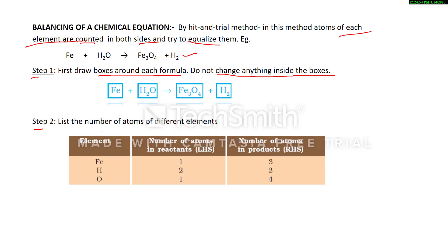In the second step, list the number of atoms of different elements. In this reaction, three elements are involved: iron, hydrogen, and oxygen. On the reactant side, iron is 1 atom, hydrogen is 2, and oxygen is 1. On the product side, iron is 3, hydrogen is 2, and oxygen is 4.